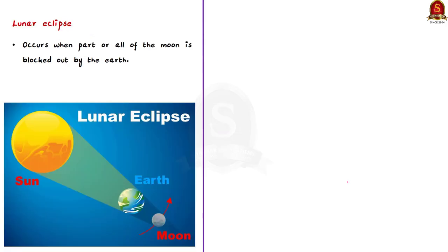Now let us see about the lunar eclipse. A lunar eclipse occurs when part or all of the moon is blocked out by the earth. Note the difference here.